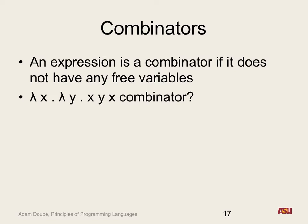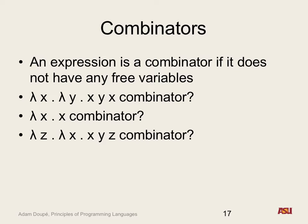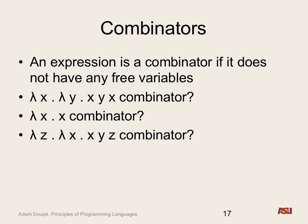We'll say that any expression is a combinator if it does not have any free variables. Lambda x dot x — the identity function, all variables are bound, so it's a combinator. Lambda z dot lambda x dot x y z — Y is free, so it's not a combinator. Most interesting functions we want to write, like Boolean arithmetic with and/or/true/false, will be defined in terms of combinators. Similarly with math — plus, minus, and all integers will be defined in terms of combinators.